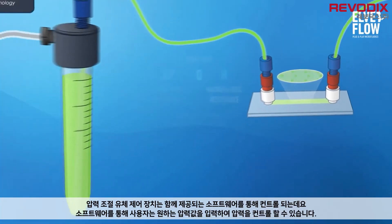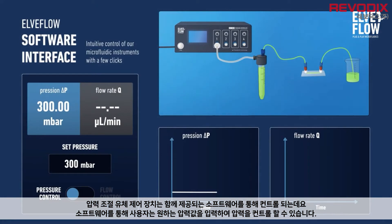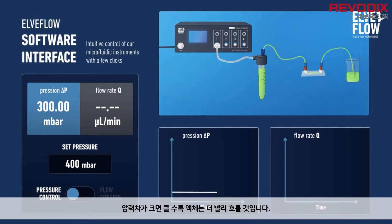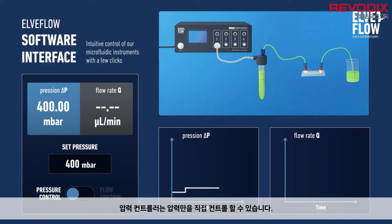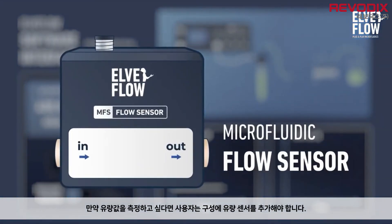The pressure-driven flow controller is controlled with software, which allows you to control the pressure by setting a target pressure. The higher the pressure difference, the faster the flow rate gets. A pressure-driven flow controller only provides direct access to pressure. To access flow rate values, one needs to add a flow rate sensor to the setup.